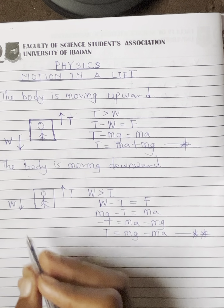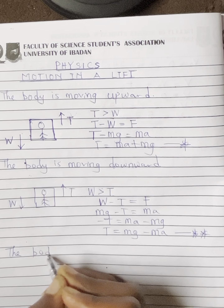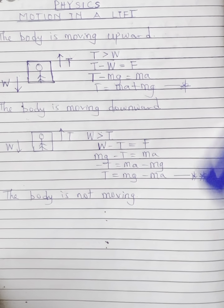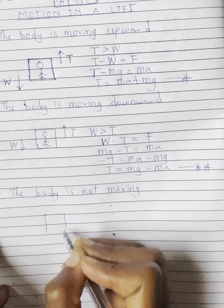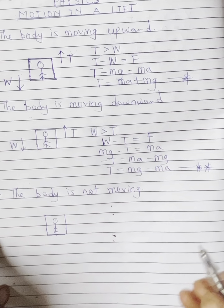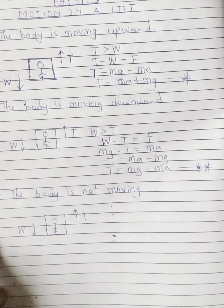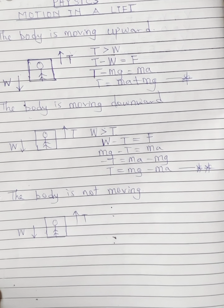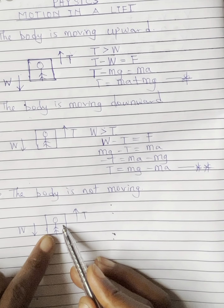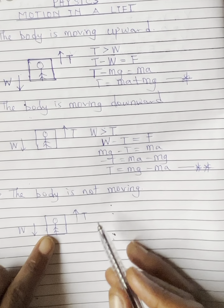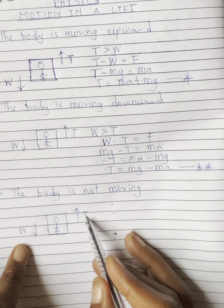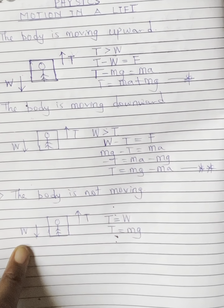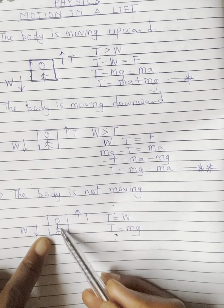The third scenario is when the body is not moving — the body is in a state of equilibrium. For an object to be in a state of equilibrium, the summation of all forces acting upward must equal the summation of all forces acting downward. This means the acceleration of the body is zero, and therefore the tension is equal to the weight. So tension equals mg.